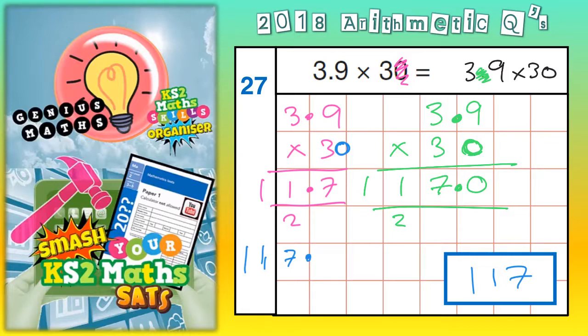Either way, you're going to get 117. Final answer.